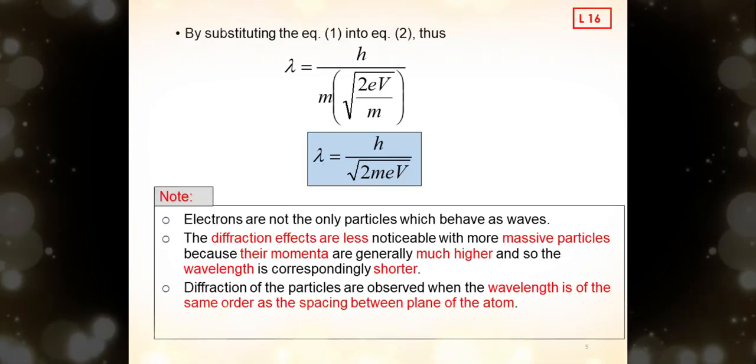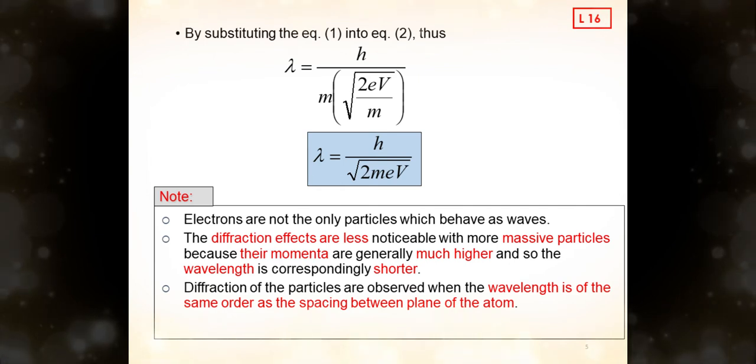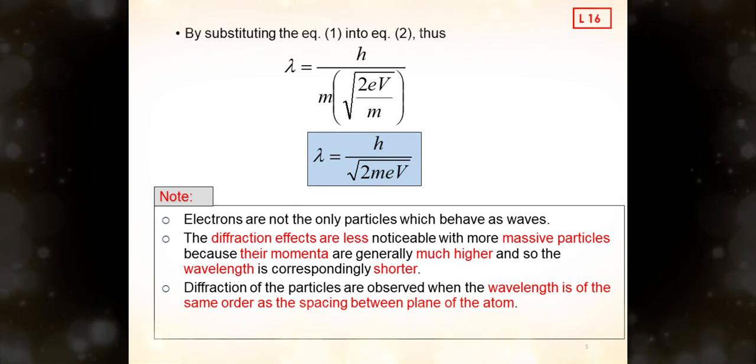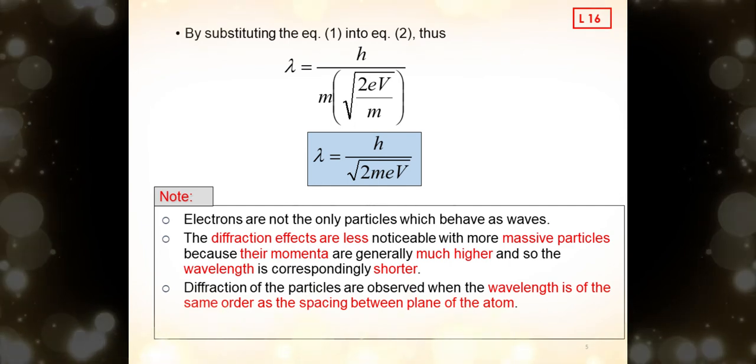By substituting equation 1 and equation 2, then we will get equation lambda equals h divided by square root of 2 m e V. Please read the extra notes here. First, electrons are not the only particles which behave as waves. Second, the diffraction effects are less noticeable with more massive particles because their momenta are generally much higher, and so the wavelength is correspondingly shorter. Last but not least, the diffraction of the particles are observed when the wavelength is of the same order as the spacing between planes of the atoms.